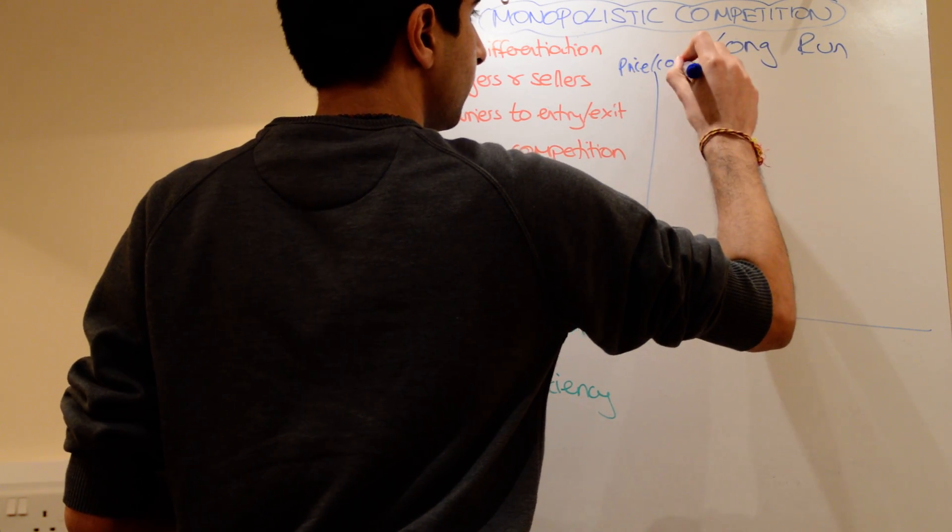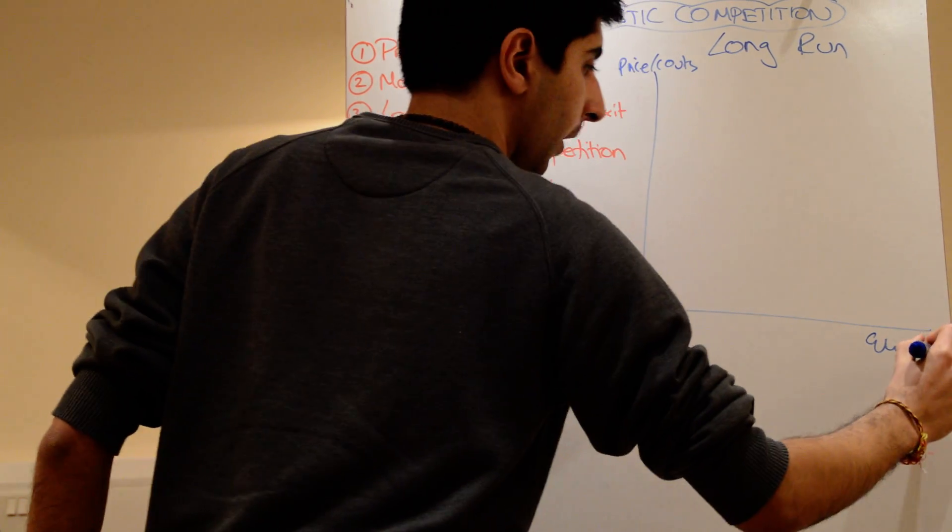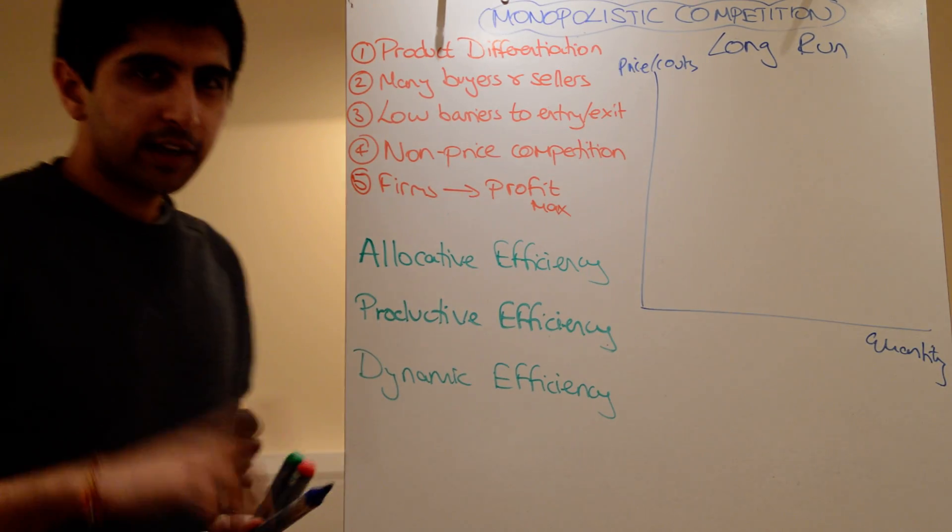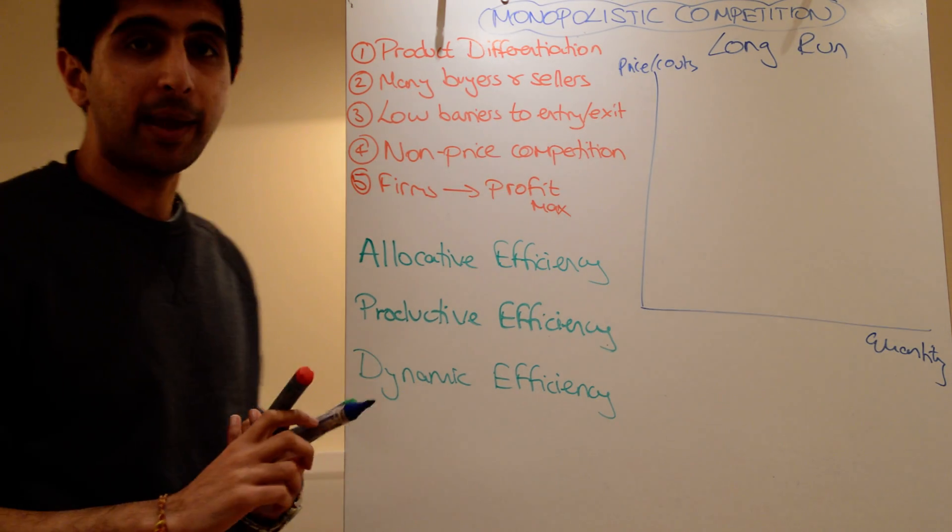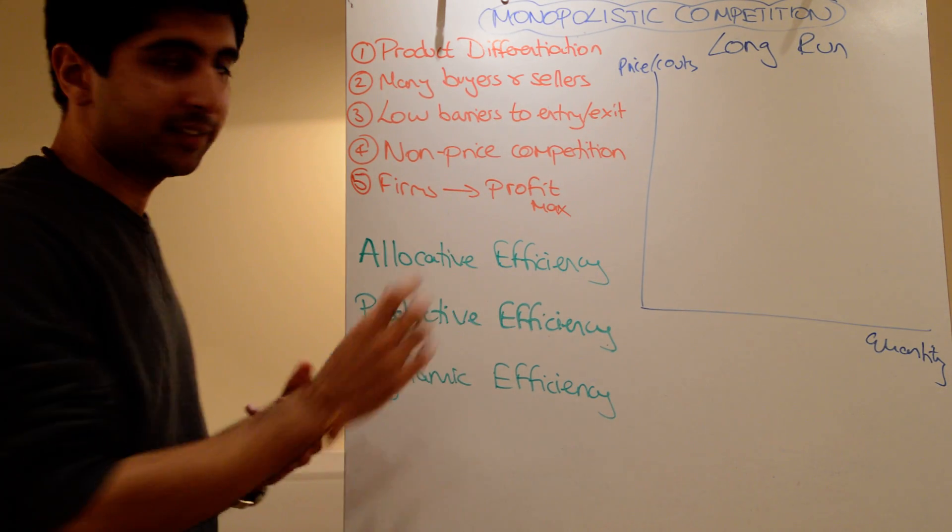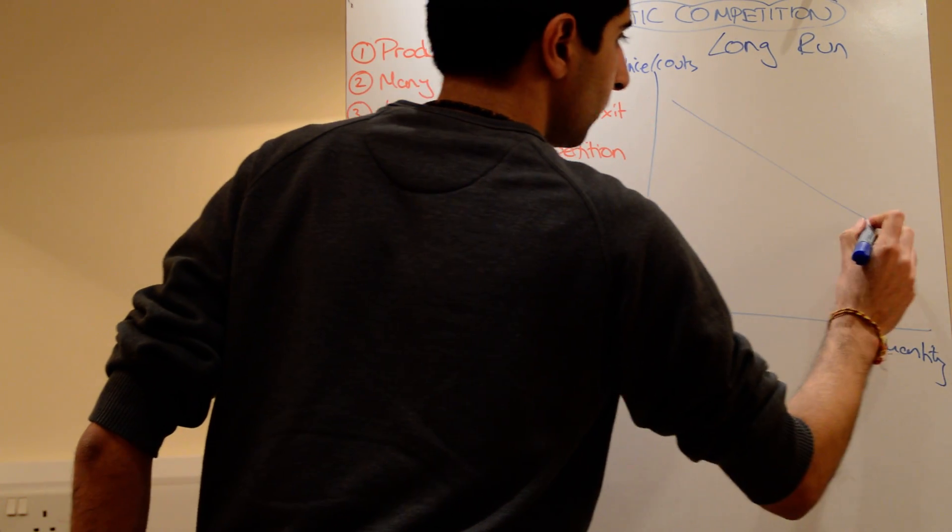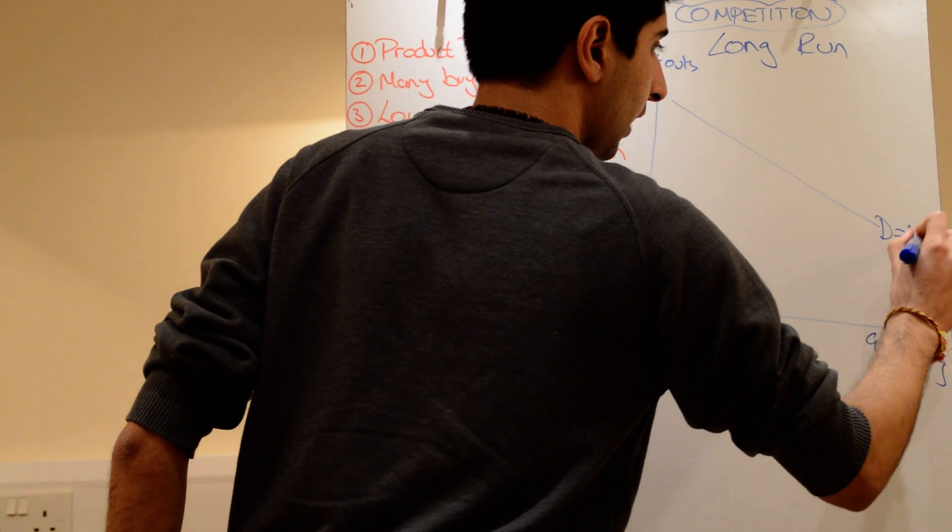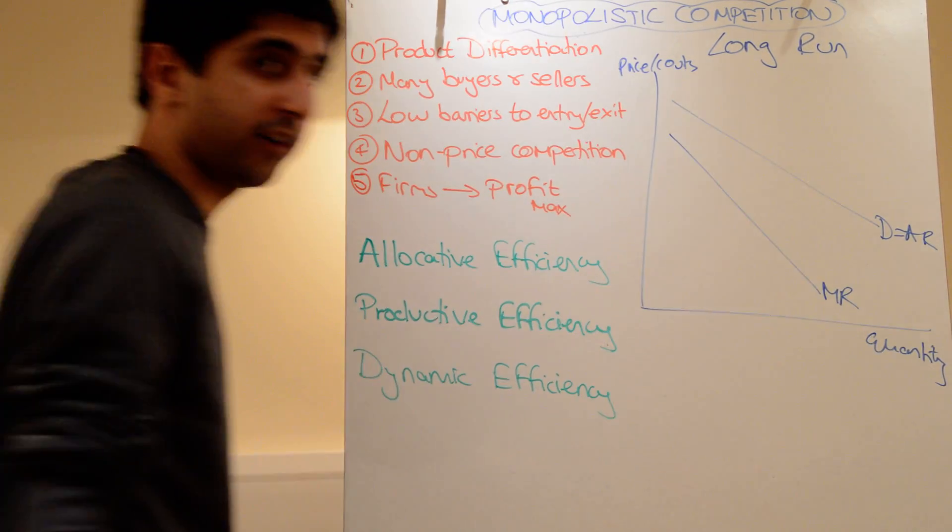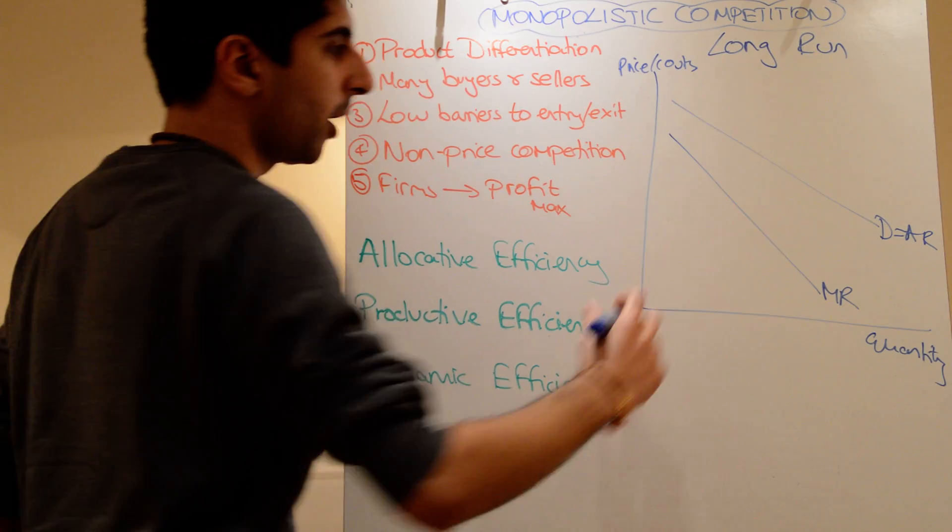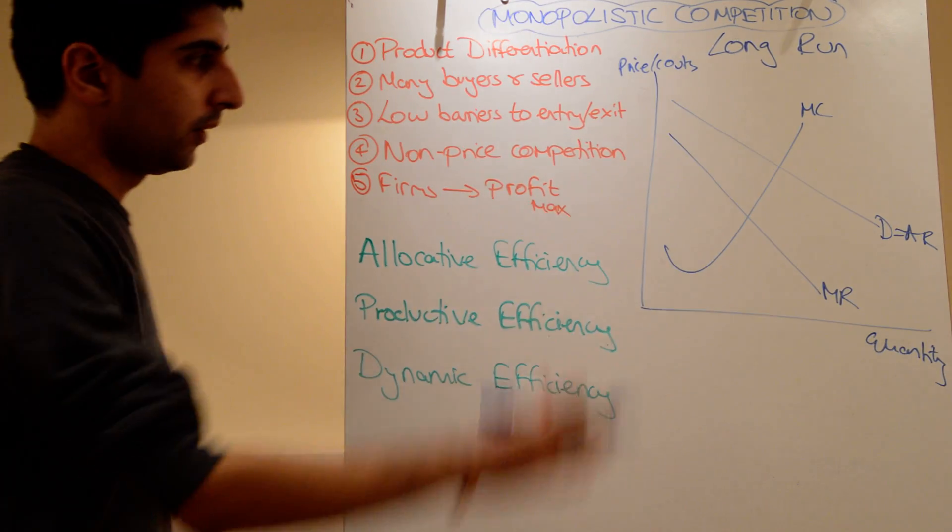This is the defining diagram for monopolistic competition. So again, price and costs, and quantity. Right, this diagram is tricky to get right. So what I would recommend you doing is following this basic step-by-step guide. Number one, draw your demand curves, draw your average revenue curve, and your marginal revenue curve. So revenue curves first, then draw your marginal cost.